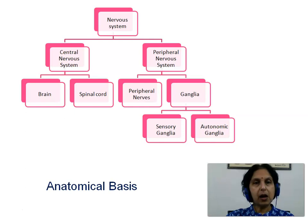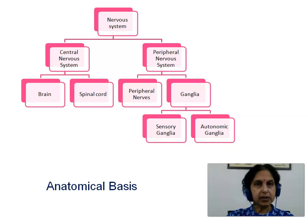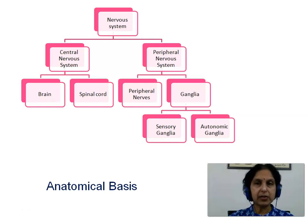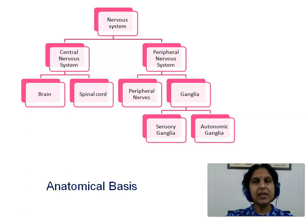Let us see how we classify the nervous system based on anatomical features. This is done as the central nervous system and the peripheral nervous system. The central nervous system is further subdivided into brain and spinal cord, while the peripheral nervous system is divided into the peripheral nerves and the ganglia, the ganglia further being divided into sensory ganglia and autonomic ganglia.